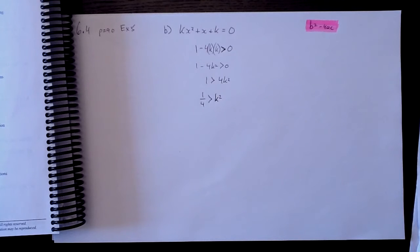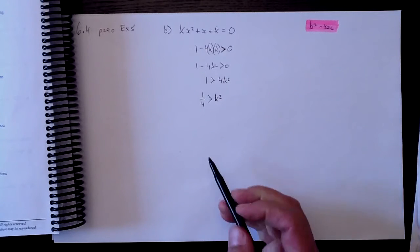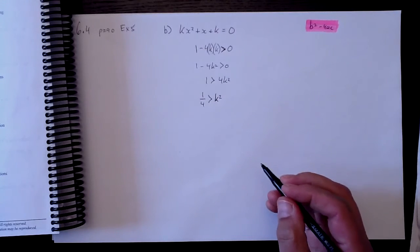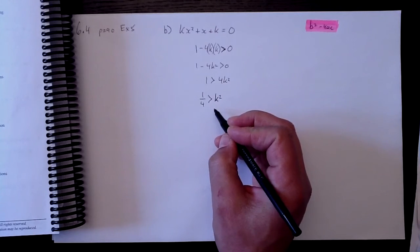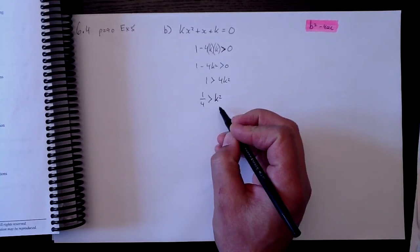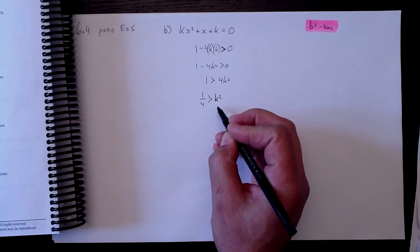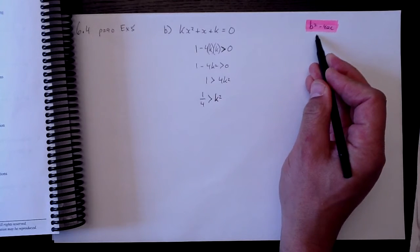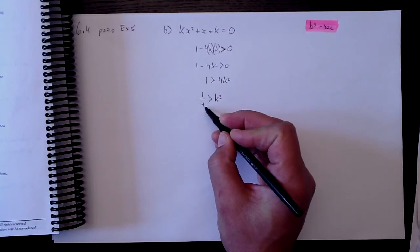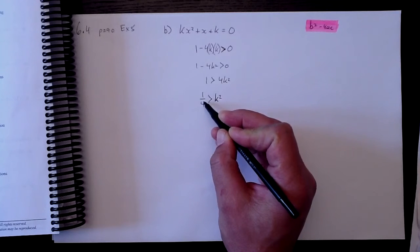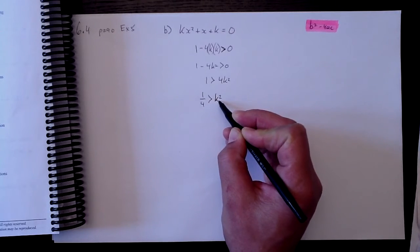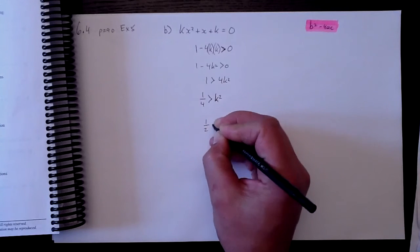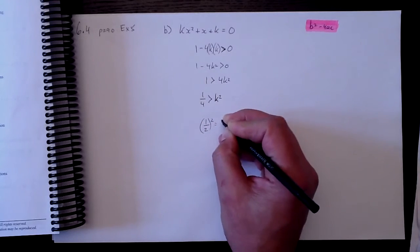Now I have to put on my thinking cap a little bit. I know that the square root of 1 quarter is 1 half. 1 half times 1 half is 1 quarter, but how does that work in this? The question is what values of k will result in a positive discriminant? Well, if a quarter has to be larger than k squared, then 1 half squared equals 1 quarter.